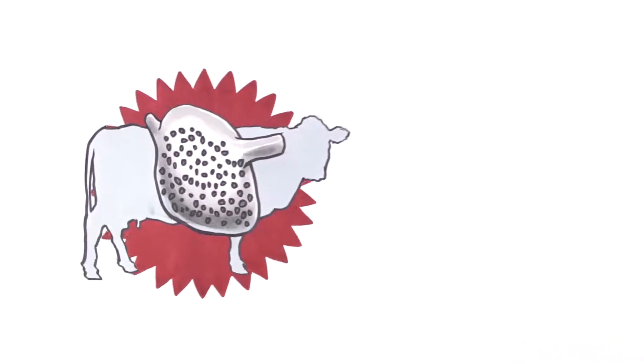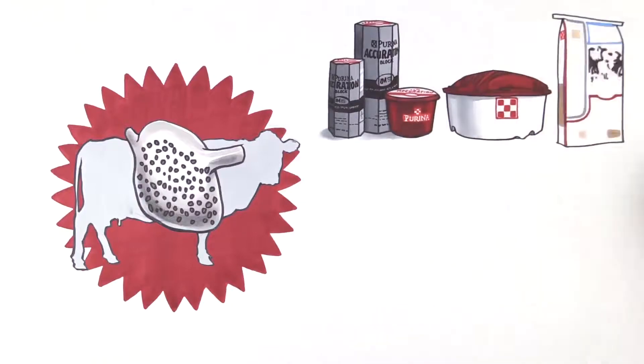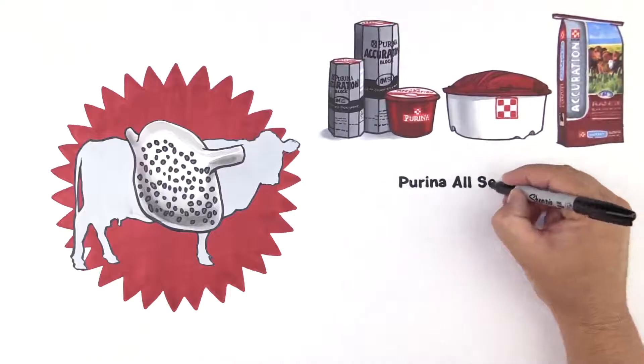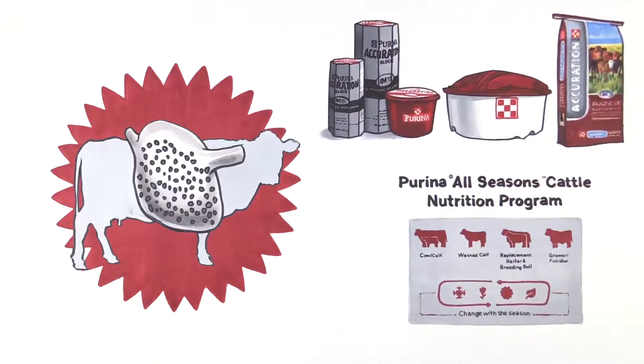That's greatness you can see. Purina Accuration with intake-modifying technology is one of many proven, flexible solutions available through the Purina All-Seasons Cattle Nutrition Program. The program covers every life stage and every season.